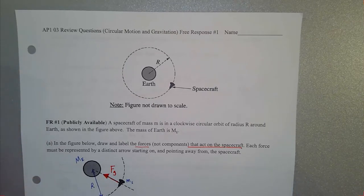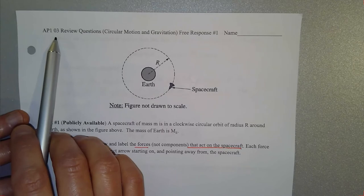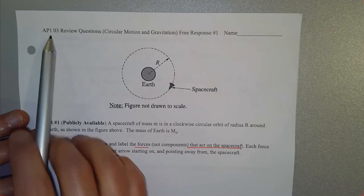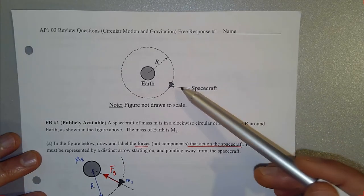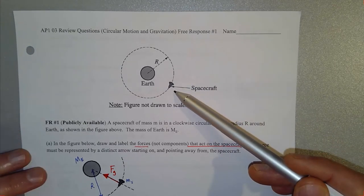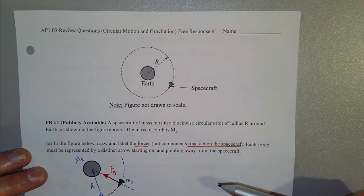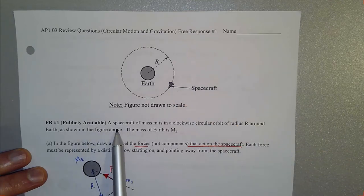In this video, we're going to talk about a publicly released AP Physics 1 free response question. This is consistent with Unit 3 stuff, dealing with circular motion and universal gravitation — specifically the combination of those two things: the physics of objects orbiting in a circular path at a constant speed.